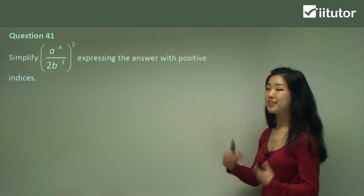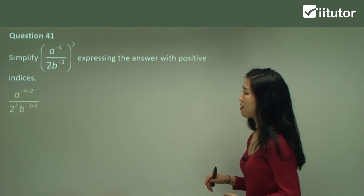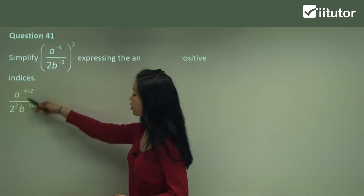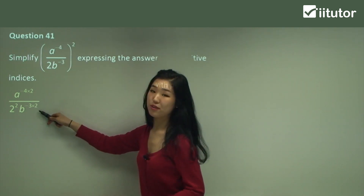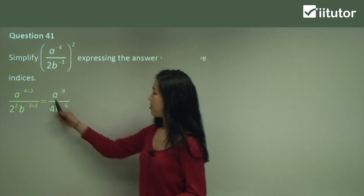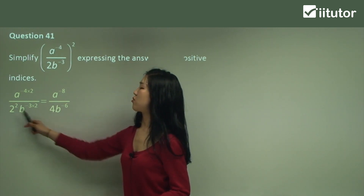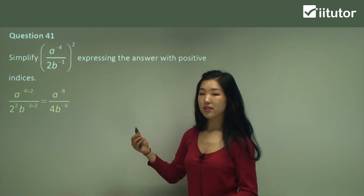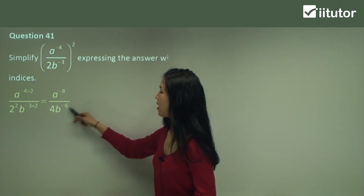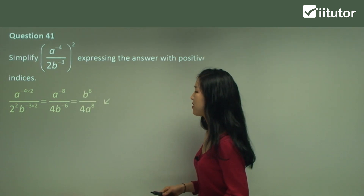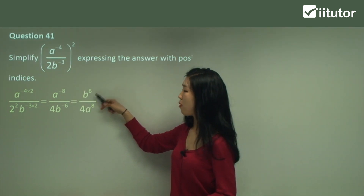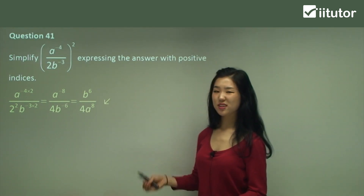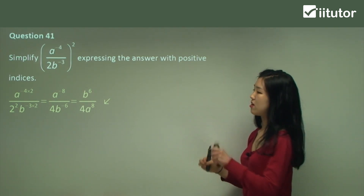Question 41. Let's get rid of all the brackets first by simplifying. Negative 4 times 2 — a to the power of 2, and b to the power of negative 3 times 2. This becomes negative 8, this becomes negative 6. 2 squared is 4. A and B still have negative indices, so bring b up and a down and change them into positive index. B is on the numerator with positive 6 as power. 4 stays as it is, and a has the power of positive 8.